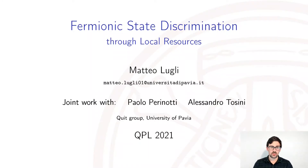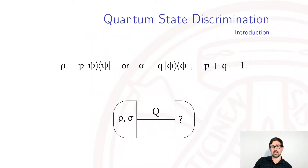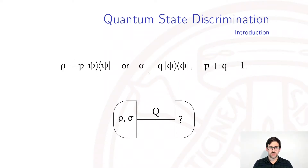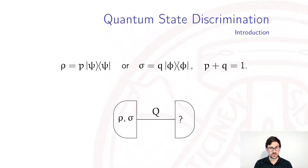We start from the task of state discrimination, which has already been deeply investigated in the quantum realm. In the most general setup, we have a black box — an unknown device that prepares system Q in either the state rho or sigma with prior probabilities P and Q. We further assume that the states are pure, and we'd like to carry out measurements on the system to discriminate the two original states. The task of state discrimination is fundamental throughout information theory.